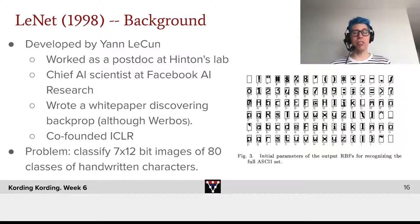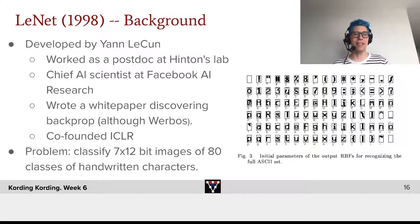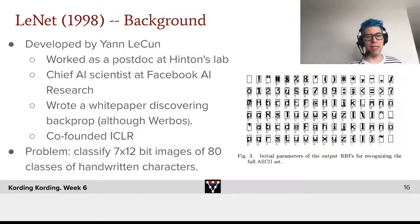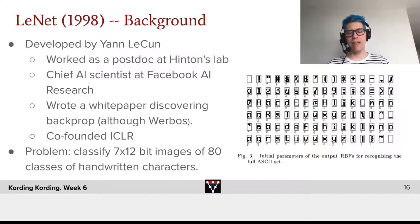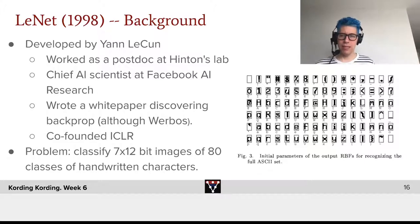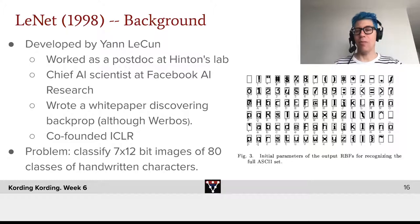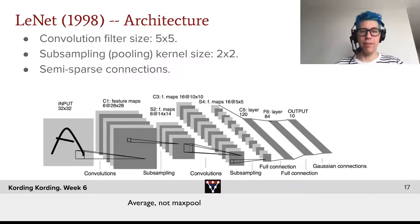Let me briefly introduce Jan LeCun. He worked as a postdoc in Jeff Hinton's lab. He is now chief AI scientist at Facebook AI Research. He also wrote a white paper arguably discovering backpropagation, although Werbos has a similar claim to it. He also co-founded ICLR, the Conference on Learning Representations. The problem that LeNet was solving was to classify 7x12-bit images — binary, always black or white — of 80 classes of handwritten characters. You can immediately see why, at a time where we can't solve such recognition problems, this is very useful.